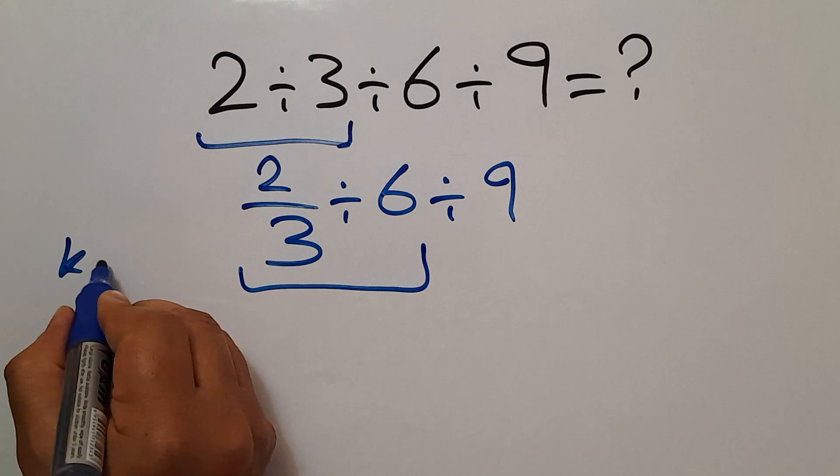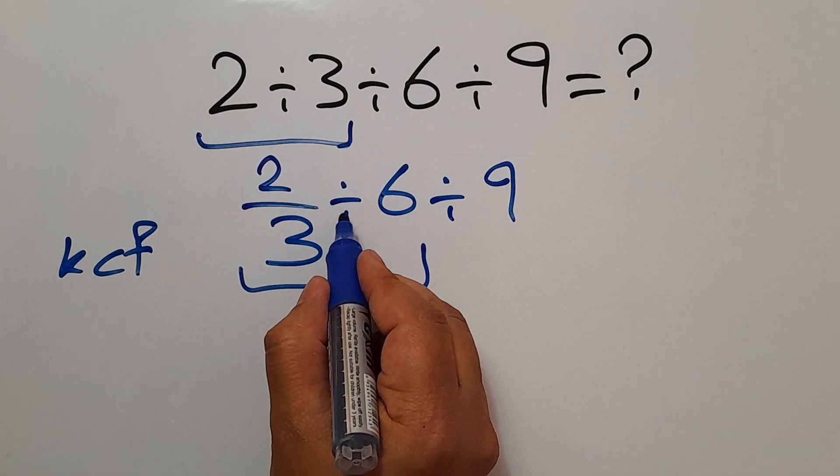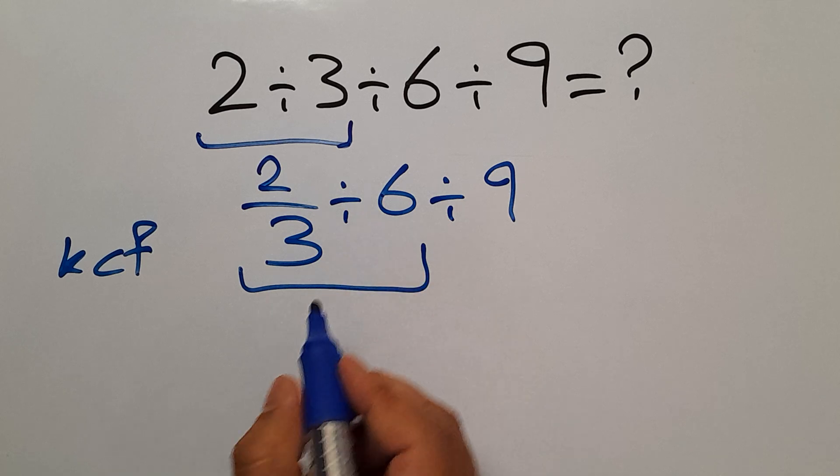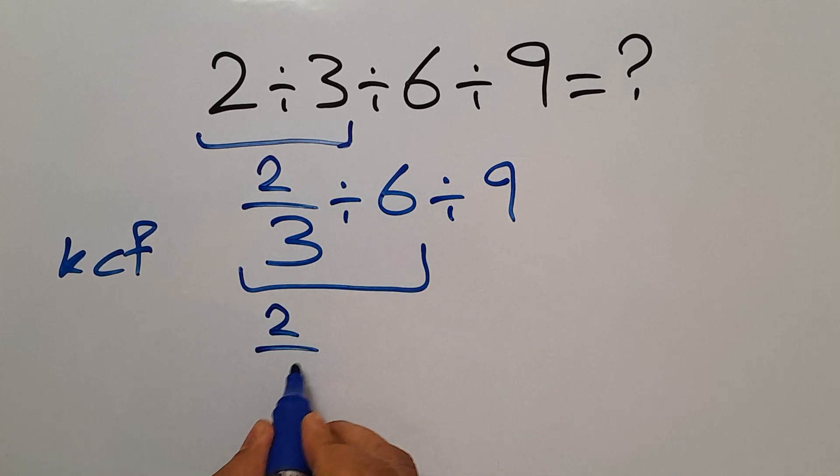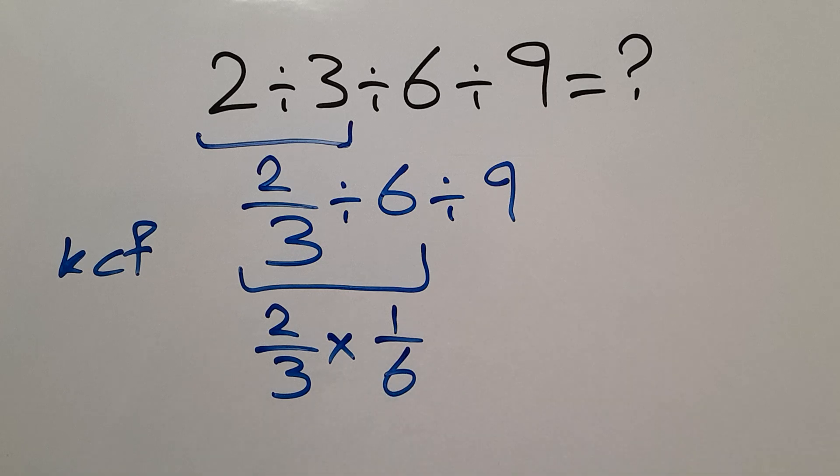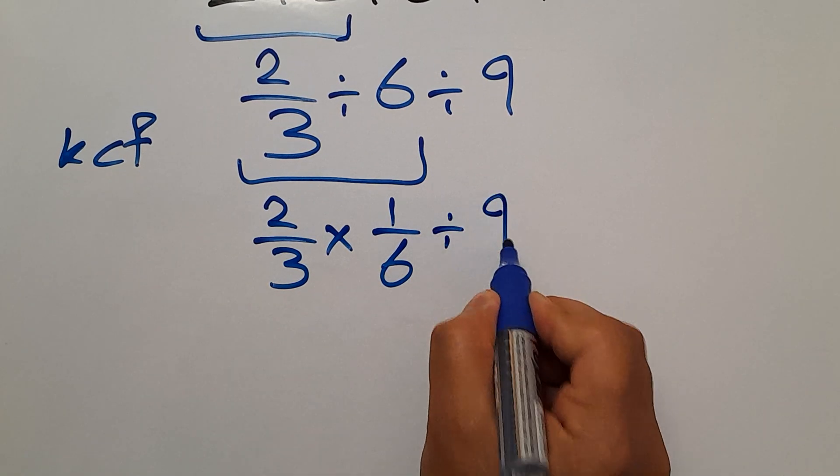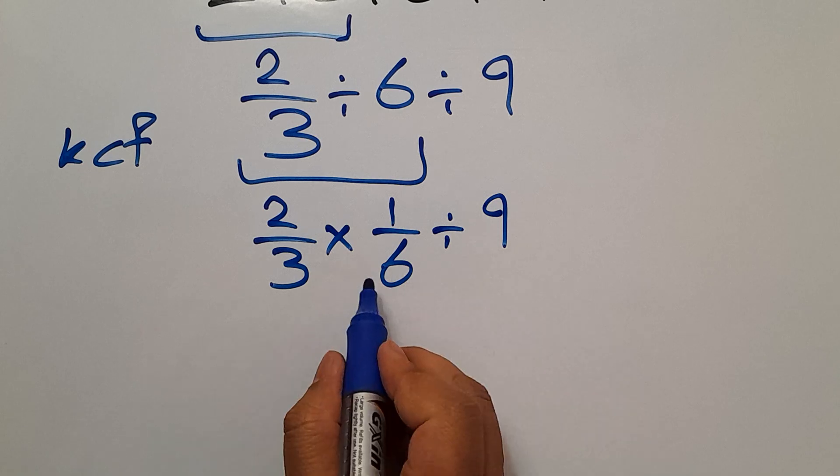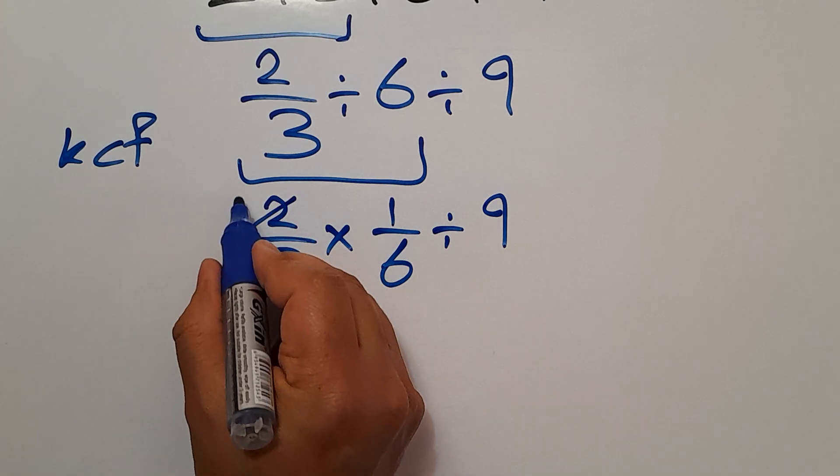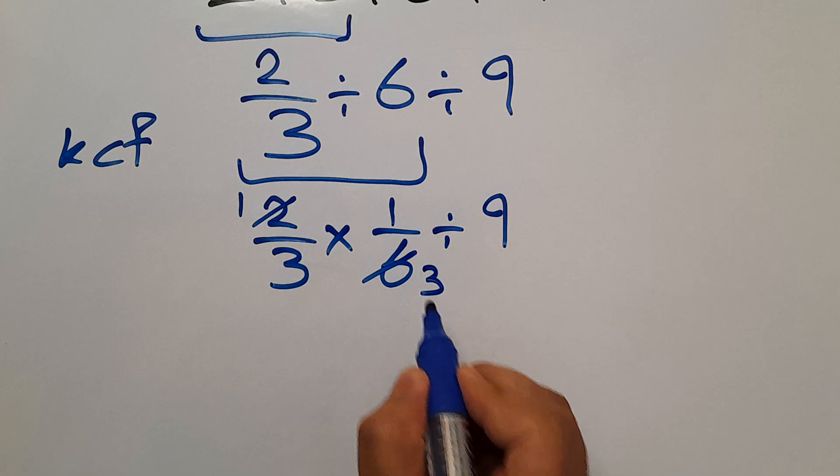Here according to the KCF rule, 2 divided by 3 divided by 6 can be written as 2 divided by 3 times 1 over 6, then divided by 9. Here, 2 divided by 2 is 1 and 6 divided by 2 is 3.